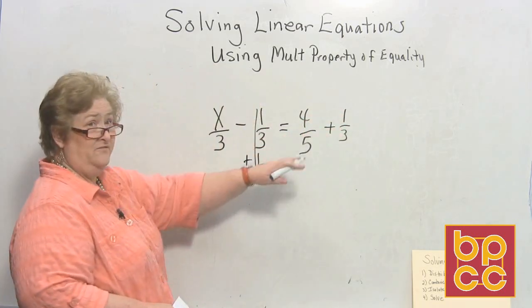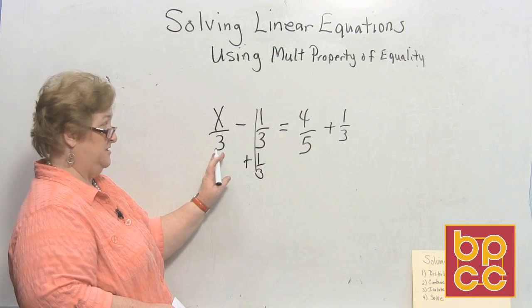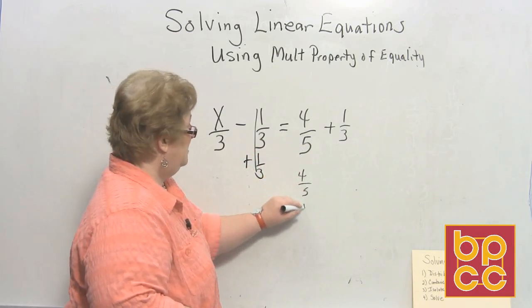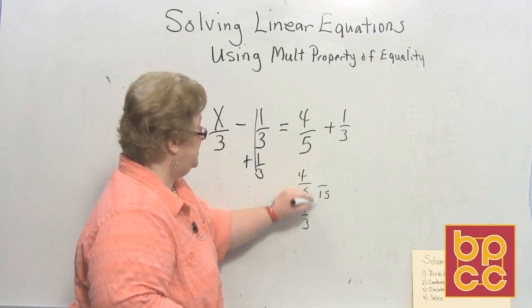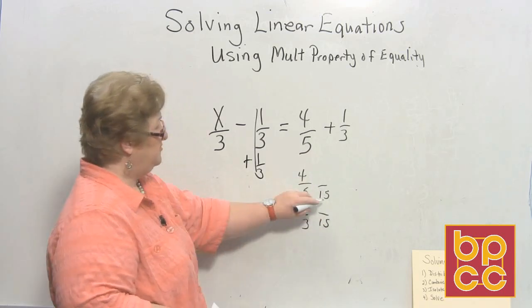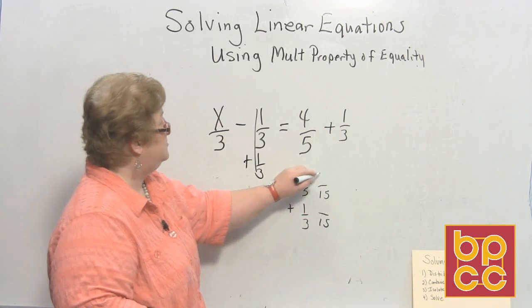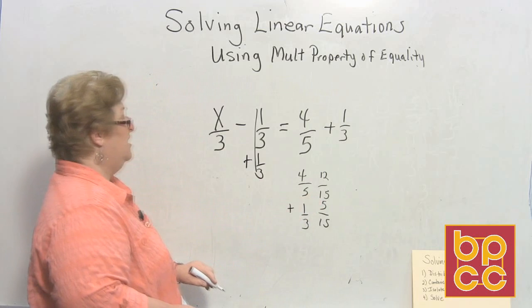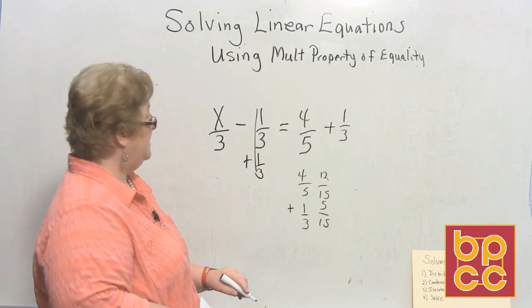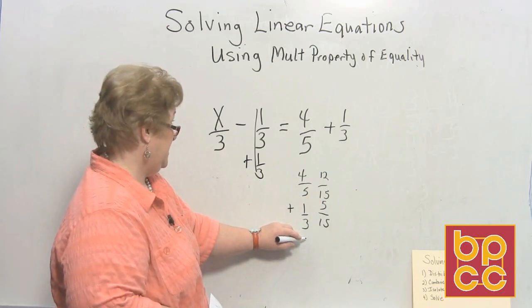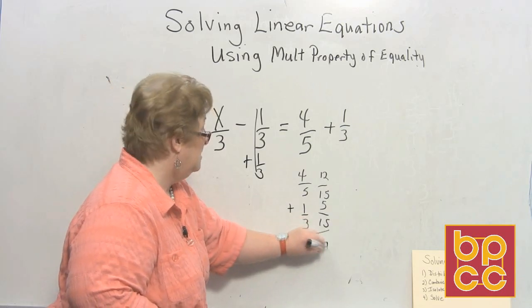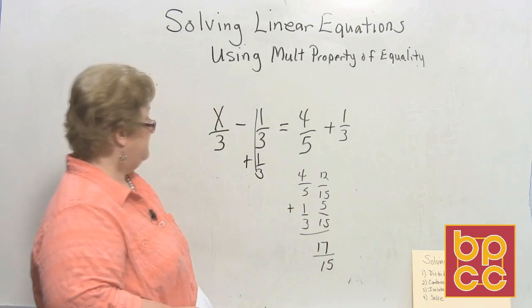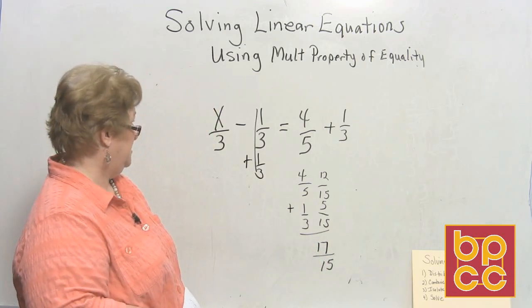So I think I better figure out what this is, then I'll come back over to this. It looks like 4/5 plus 1/3. The common denominator is 15. So 5 into 15 is 3 and 3 times 4 is 12. And 3 into 15 is 5, 5 times 1 is 5. So look what we have now. We have a 17 over 15.